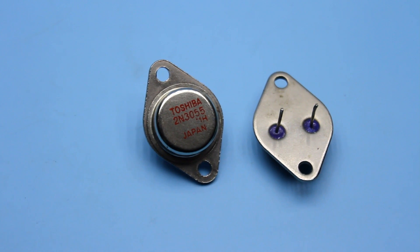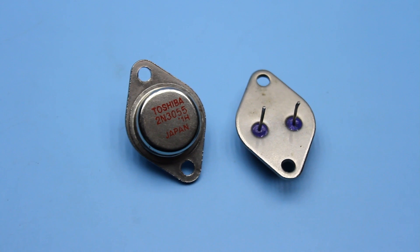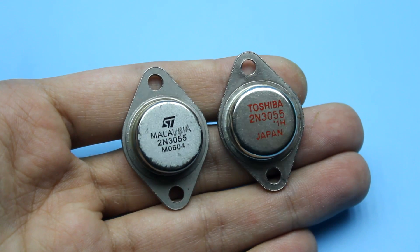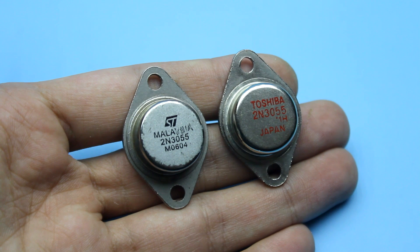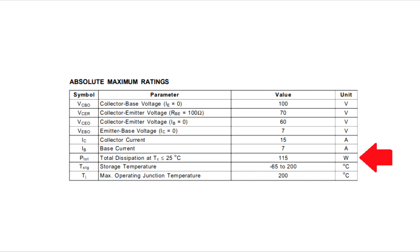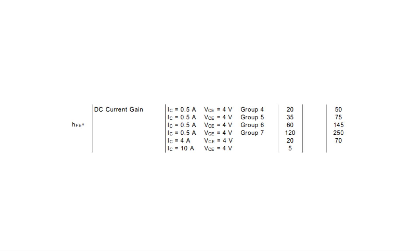I strongly advise the transistors in the metal case 2N3055. For such a circuit, they fit perfectly. A metal housing, decent power, and collector current. Gain of current about 200. This is what you need.